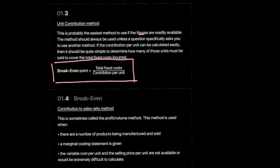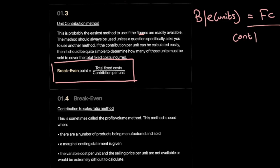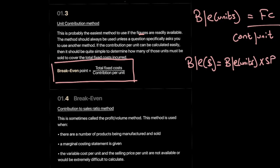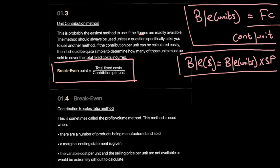To calculate the breakeven point in units, use fixed cost divided by contribution per unit. This shows the minimum units required by the firm to cover all its costs. To convert the breakeven level of output into revenue terms — that is, breakeven in dollar terms — take the breakeven units and multiply by the selling price per unit. This gives breakeven expressed as revenue.